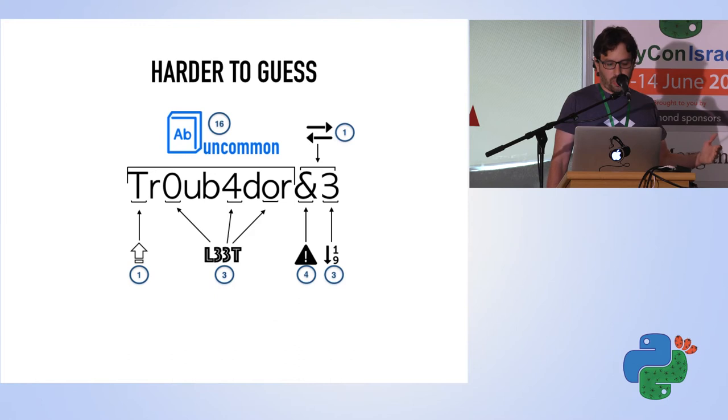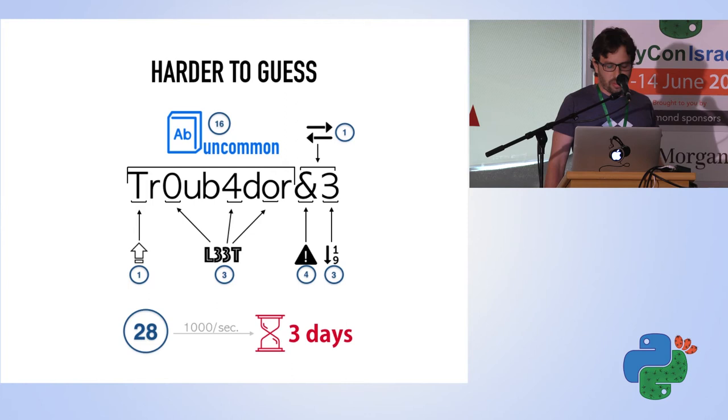When we sum it all up, we get the entropy number in a more realistic approach, which is 28. At the same rate of 1,000 guesses per second, this can be cracked in three days, which actually makes this password really weak.